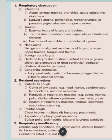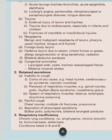A foreign body in the larynx can also cause respiratory obstruction. Edema of the larynx due to steam, irritant fumes or gases, allergy such as angioneurotic edema or drug sensitivity, and radiation can also cause obstruction. Bilateral abductor paralysis causes the vocal cords to remain closed, producing respiratory obstruction. Congenital anomalies such as laryngeal web, cyst, tracheoesophageal fistula, and bilateral choanal atresia are also indications.